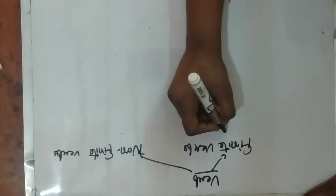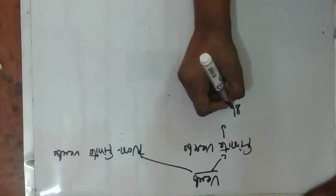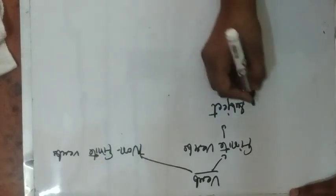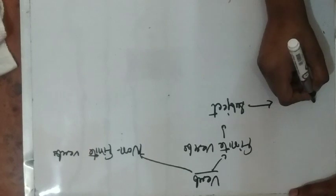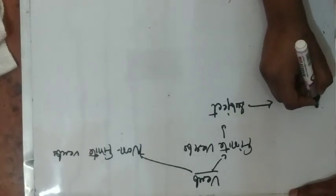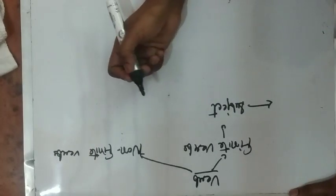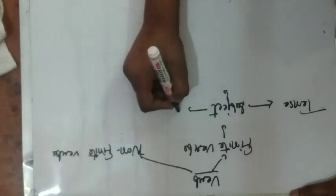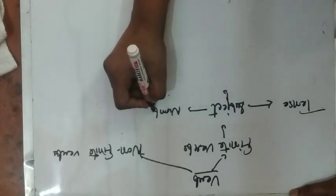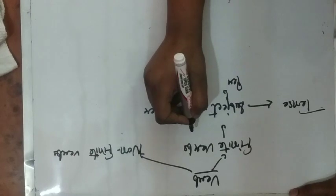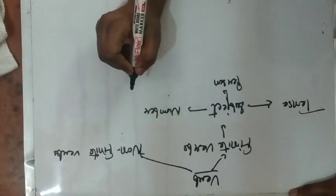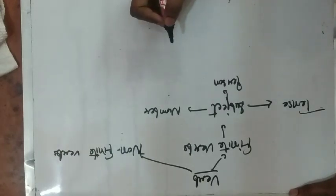Finite verbs change according to subjects. The subject can be in a singular form or in a plural form. Finite verbs change according to tense, according to person, and according to number. Here I am going to show you some examples.